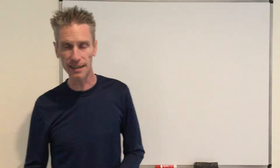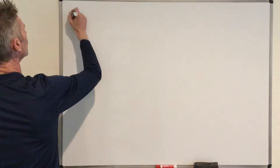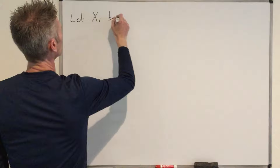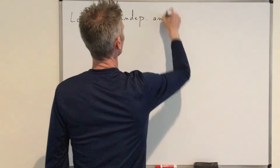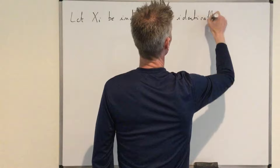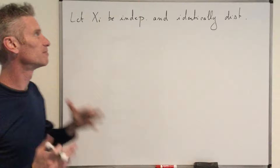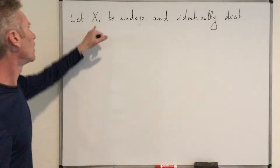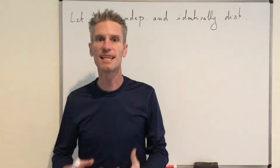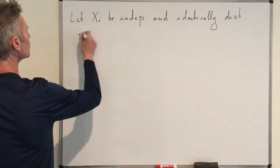So I'm first going to write this — that's the framework. Let Xi be independent and identically distributed. Identically distributed means that those random variables have the same distribution, or you can think of it as the same distribution function. In particular, this means that all those random variables have the same mean — they have the same expected value.